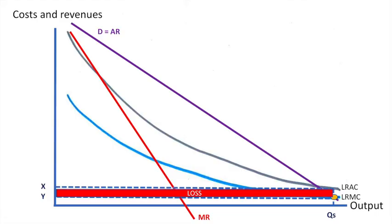Allocative efficiency is achieved because price is equal to marginal cost. Productive efficiency is achieved because the firm is producing at its lowest average cost of production.